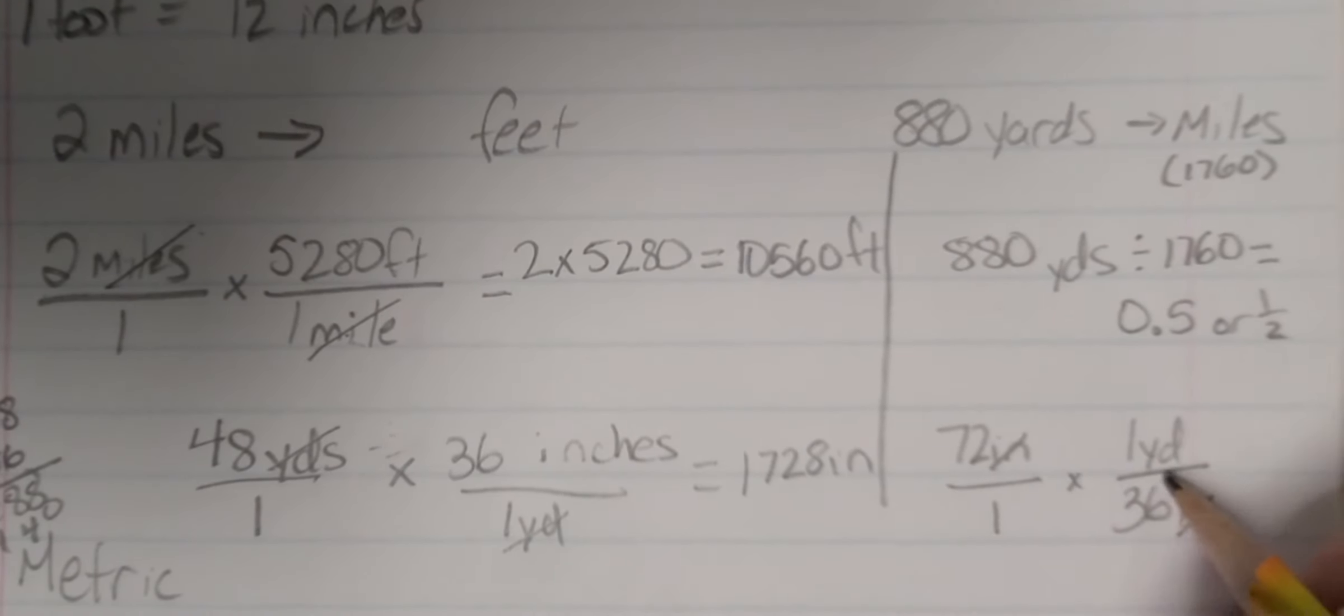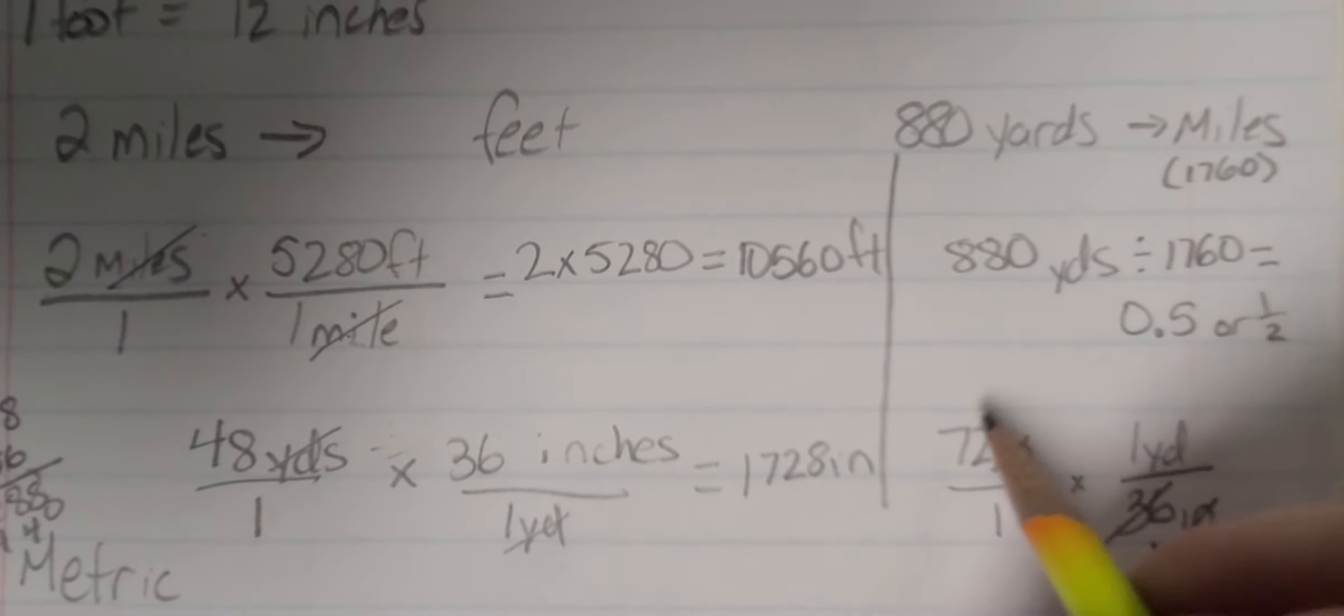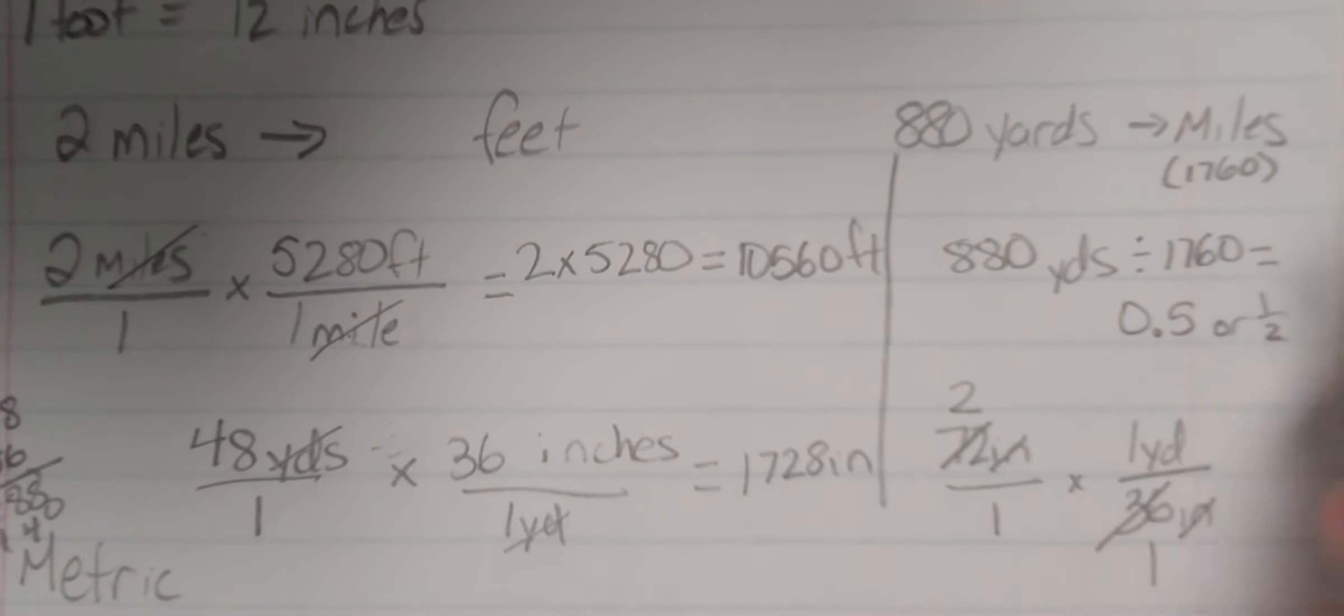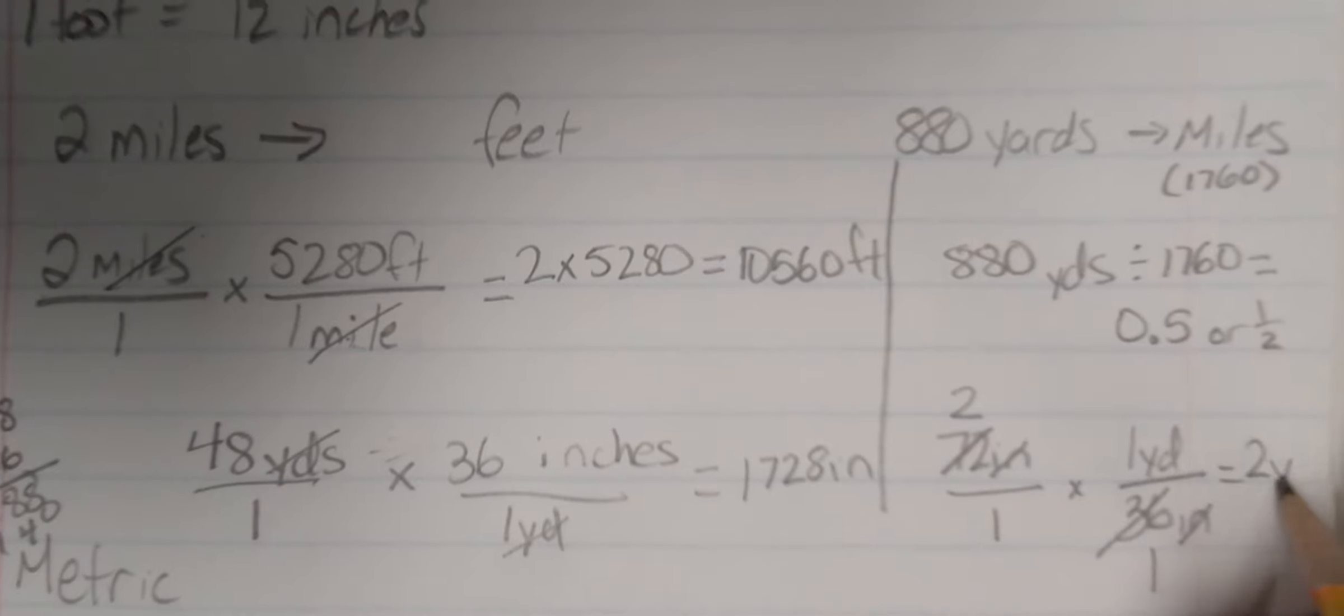Even 36 and 72. 36 goes in this 36 once, goes in the 72 twice, giving us 2 yards.